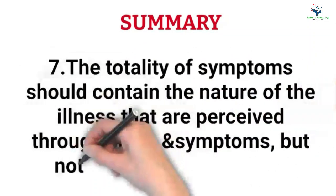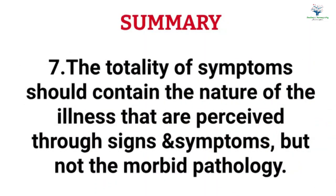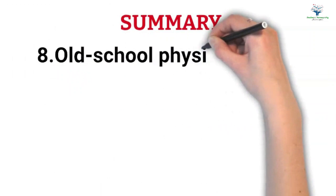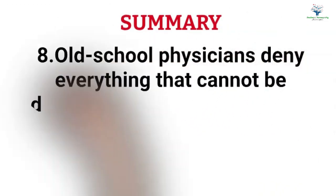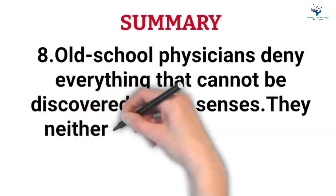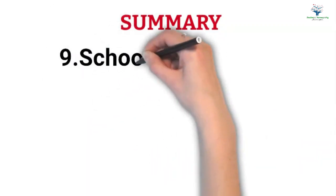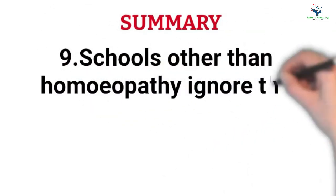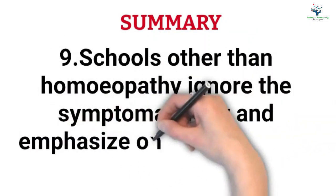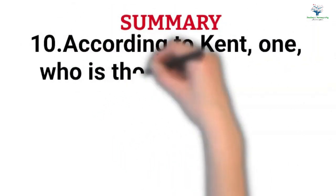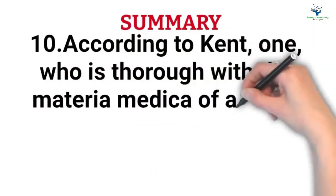The totality of symptoms should contain the nature of the illness that are perceived through signs and symptoms but not the morbid pathology. Old school physicians deny everything that cannot be discovered by the senses. They neither observe the sick nor want to know about their symptoms. Schools other than homeopathy ignore the symptomatology and emphasize on pathology and heredity. According to Dr. Kent, one who is thorough with the materia medica of animal, vegetable, and mineral kingdoms can treat the whole human race.